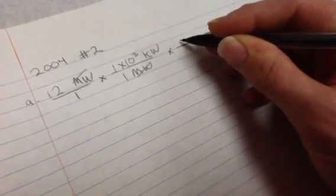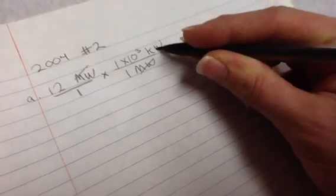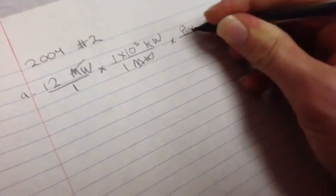So megawatts cancels. And then, on the next one, it gave me in the problem that 8,000 hours is how much I can operate in a year. So, remember I told you in the beginning that kilowatt hours are nothing but hours times kilowatts. So if I take that hours, that 8,000 hours, and I put it right here, 8000 hours, and then years down here, I'm going to be left with kilowatt hours per year. And that's what they wanted.